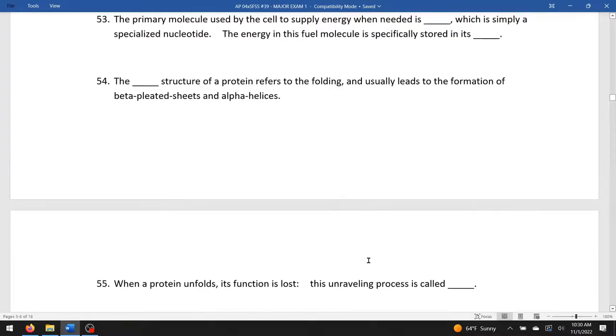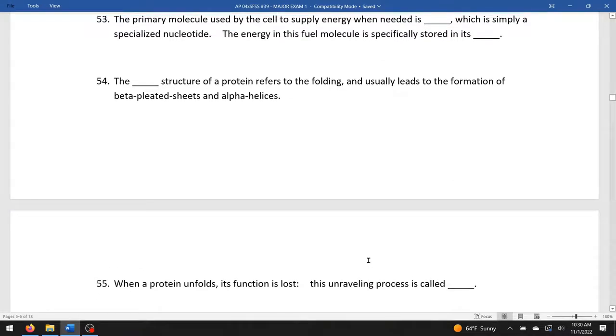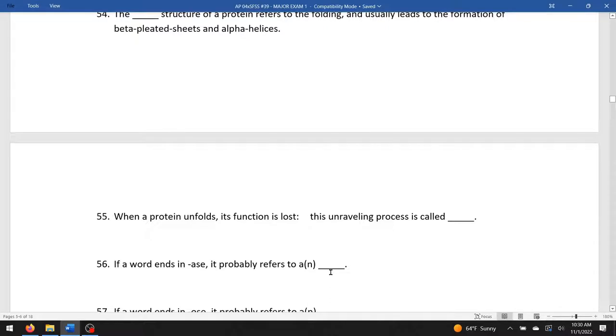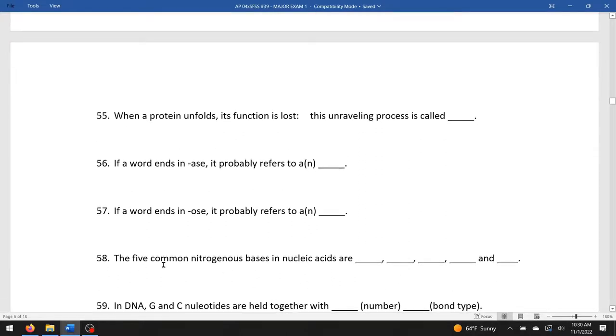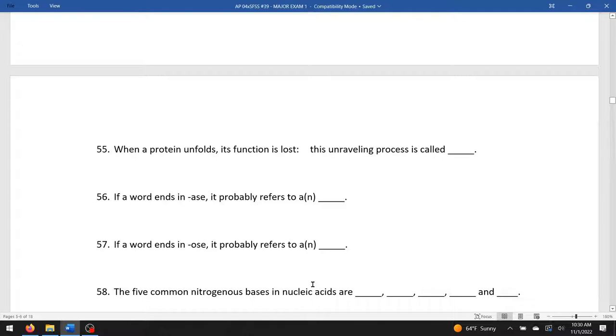When a protein unfolds, its function is lost. This unraveling process is called denaturing. If a word ends in ace, it probably refers to an enzyme. If it ends in ose, it probably refers to sugar. The five common nitrogenous bases in nucleic acid: G-A-T-C and U in any order. Guanine, adenine, cytosine, thymine, and uracil.